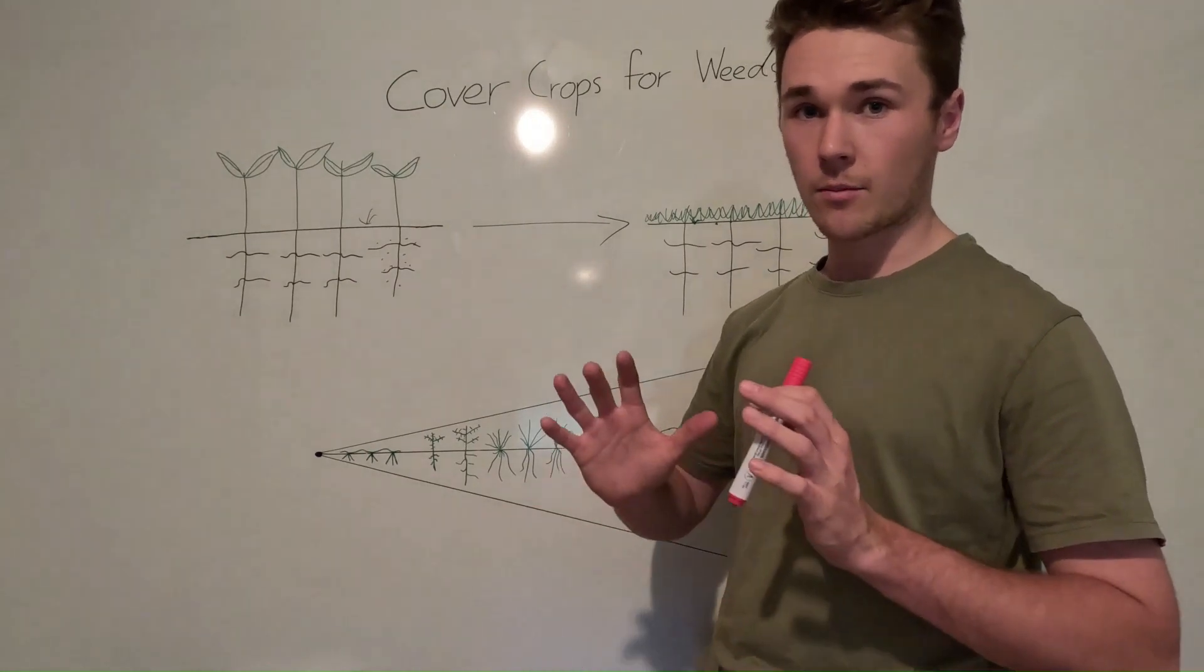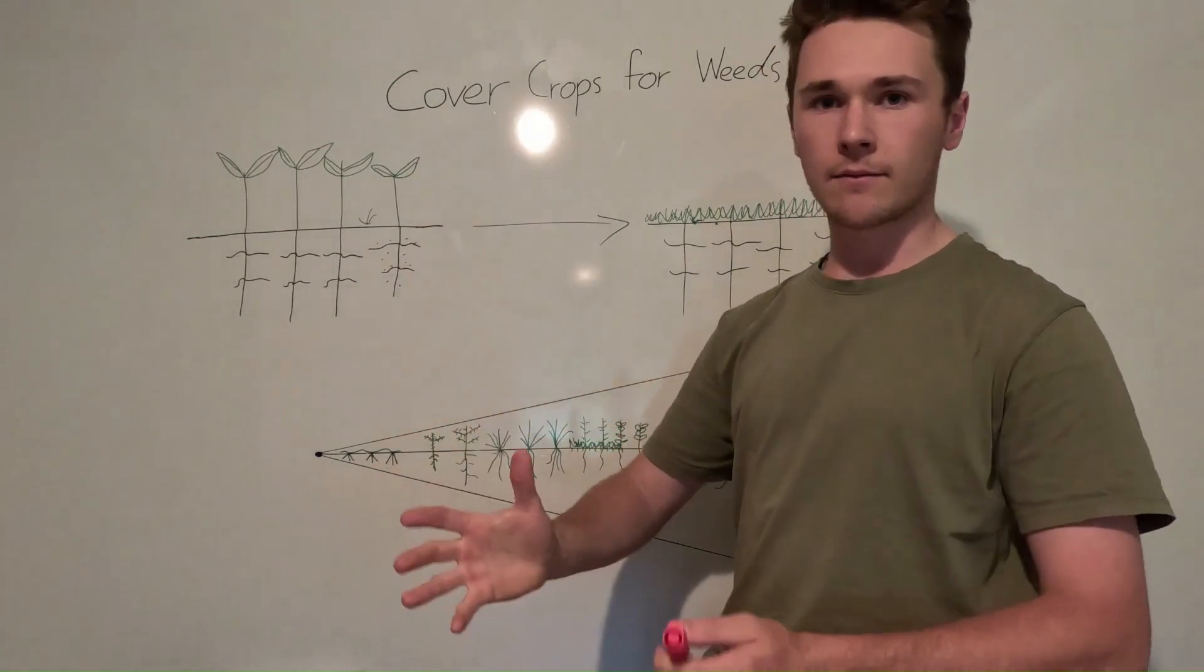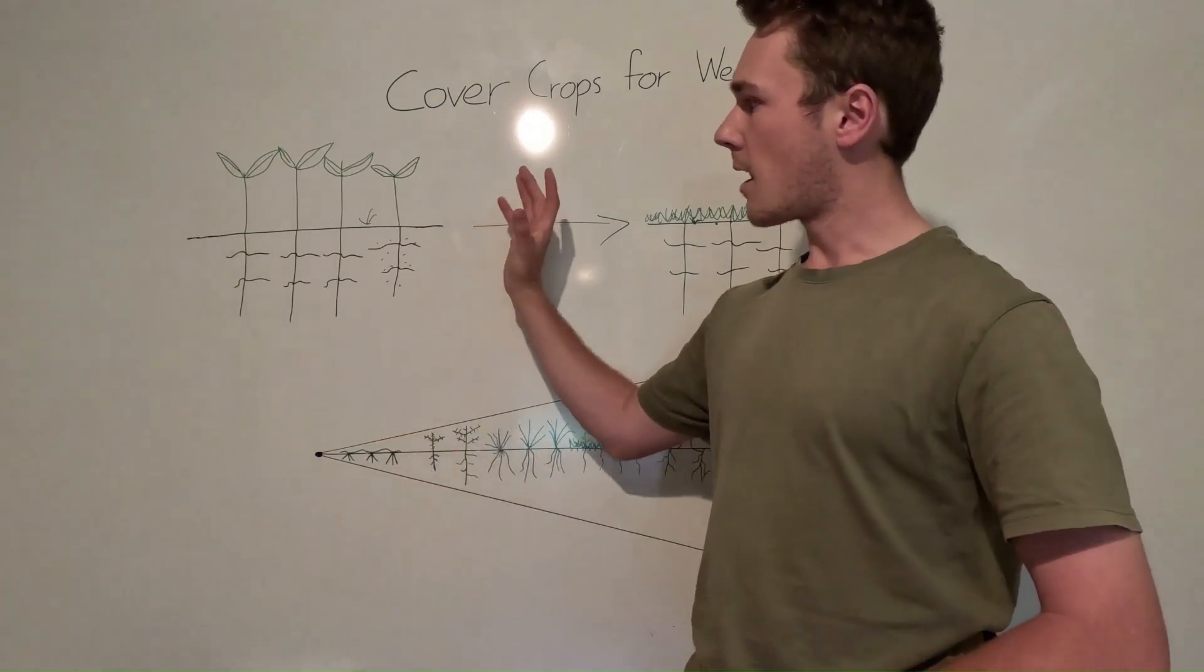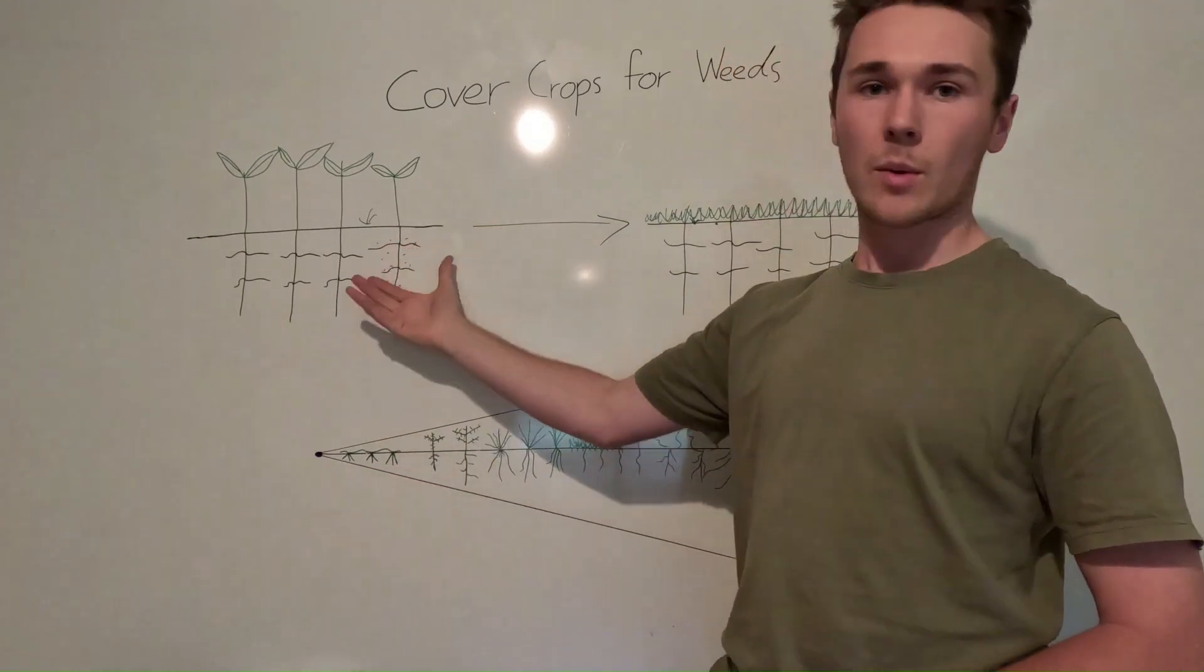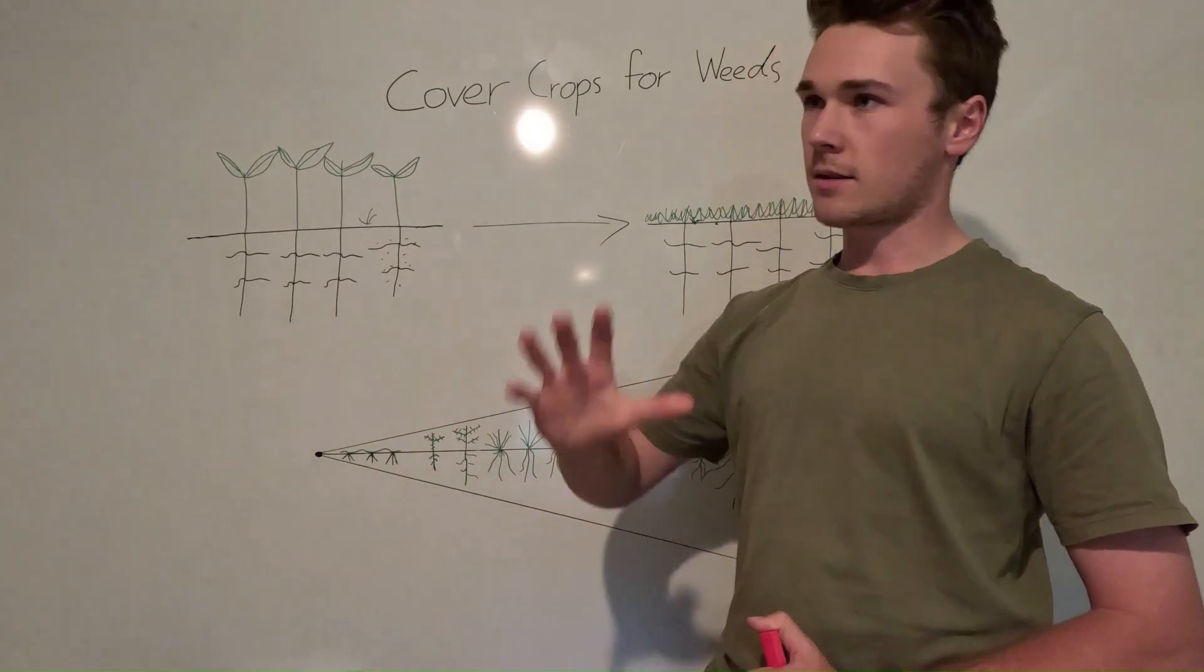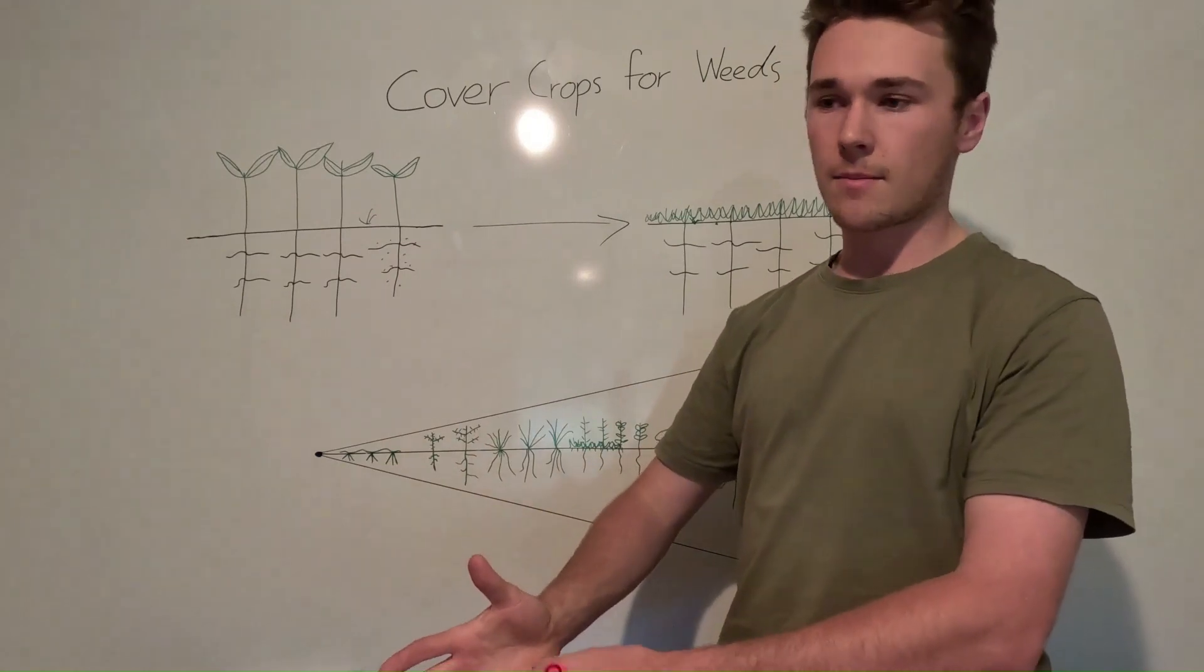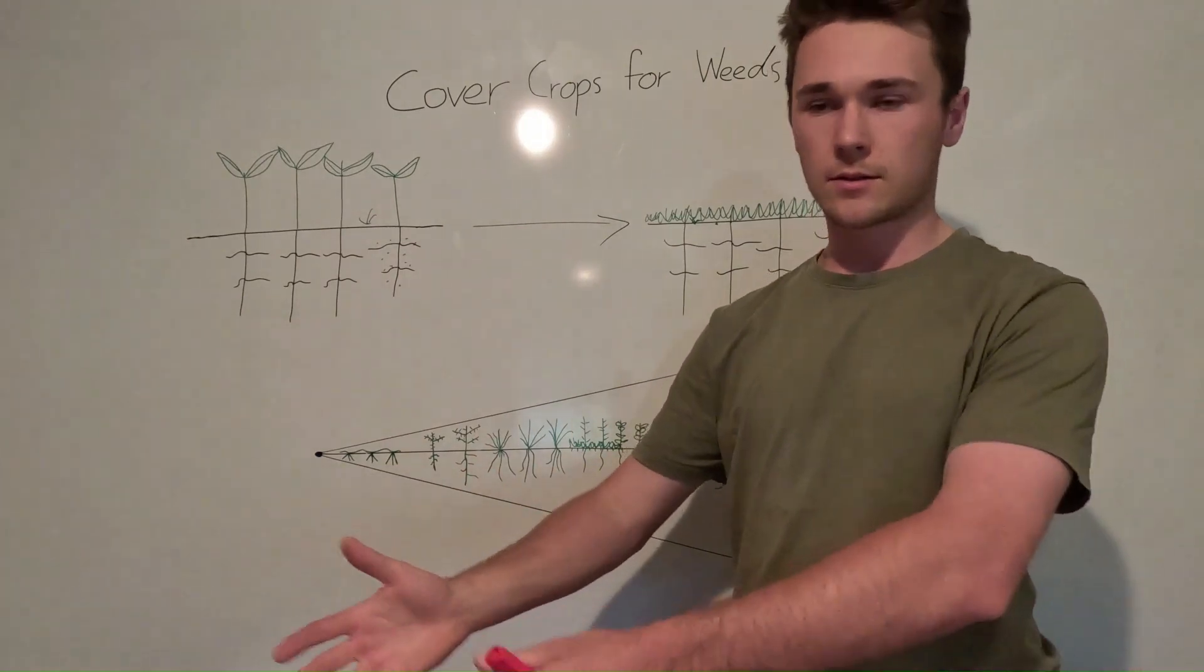And the final way that cover crops can prevent weeds from coming up is simply by creating an environment which our favorable crops or the crops that we want to grow actually can out-compete weeds. There's an idea that weeds are there simply because they're able to out-compete whatever you want to grow.